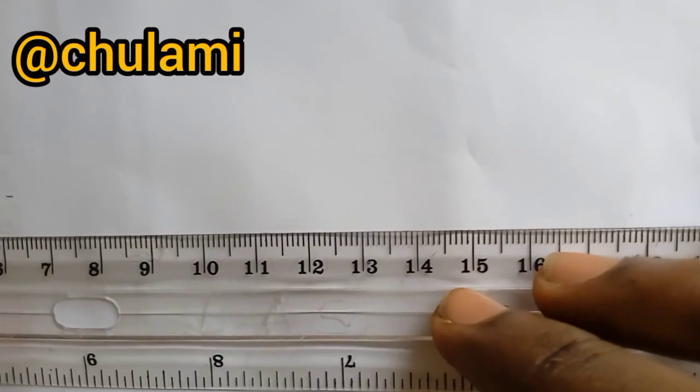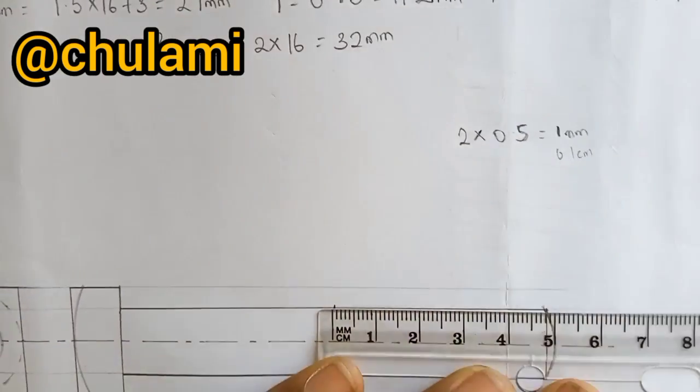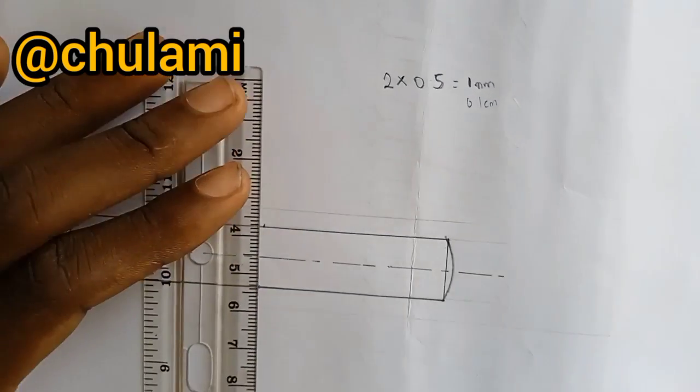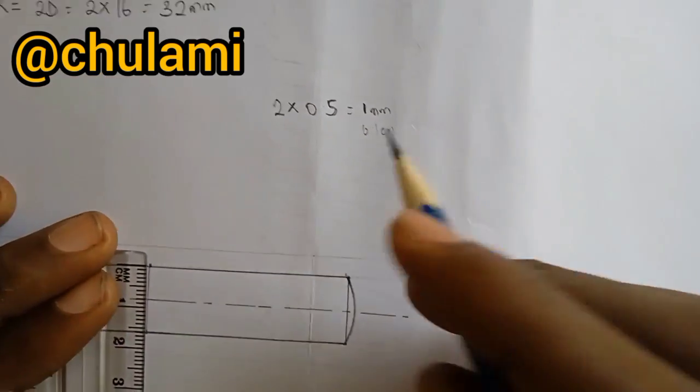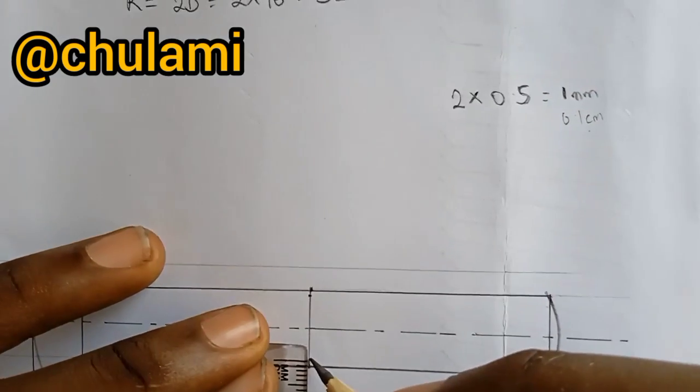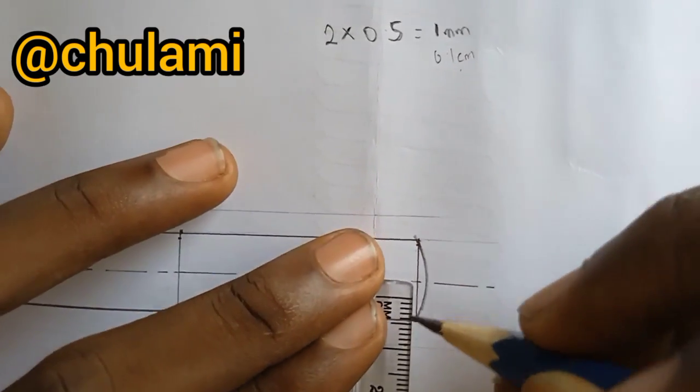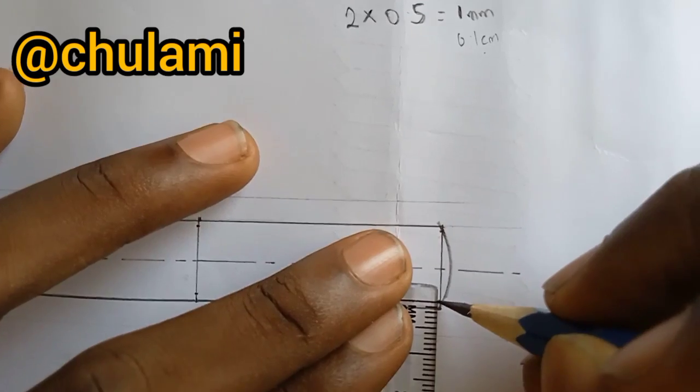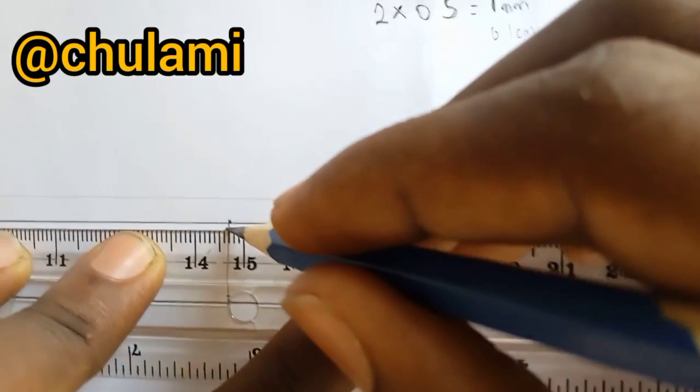So measure 48, this is 48. Then we'll join. Now, we measure our 0.1 cm. This is 0.1, this is 0.1, this is 0.1.